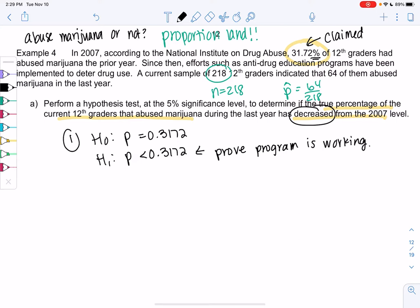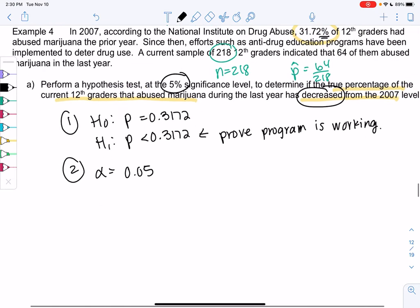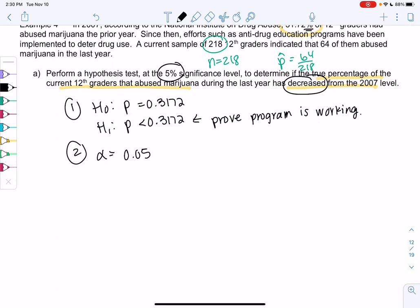And then step two, we'll state alpha, and then check out the sample. Alpha will be 0.05. So let's check out the sample, and then we'll find the Z-score and P-value. My sample tells me that n is 218, P hat is 64 out of 218, which gives me 0.2936. So a little bit smaller than 31, but I don't know if it's small enough. It could just be random, and maybe the program was doing nothing.